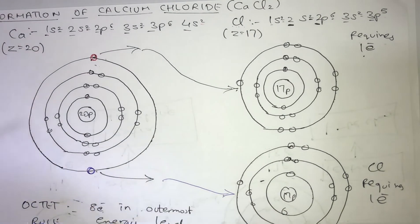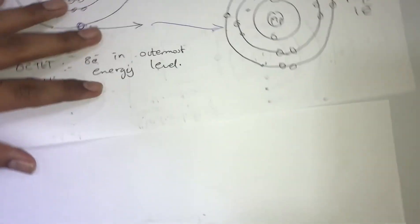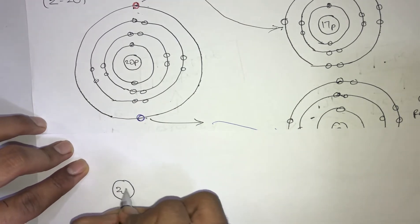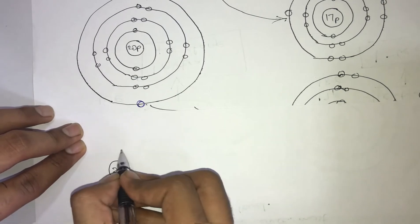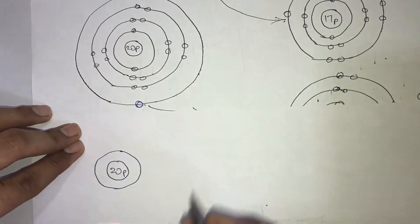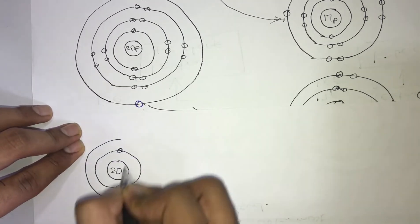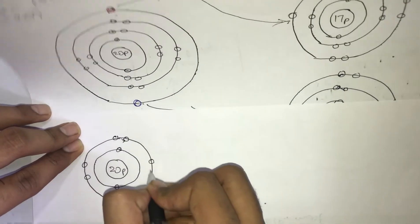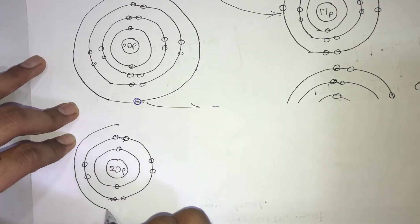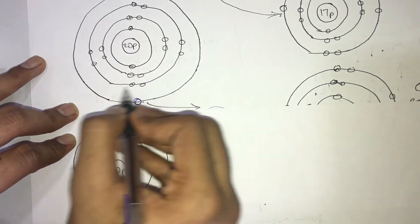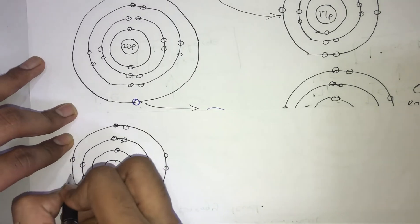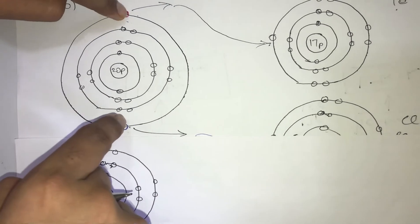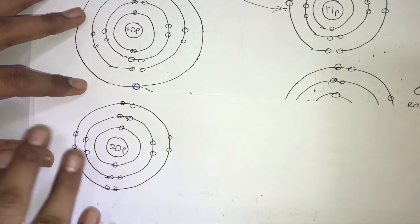Now let us draw the new diagram of the calcium atom after donating its electrons. It has 20 protons in the nucleus. In the first energy level it has 2 electrons, in the second energy level it has 8 electrons, and in the third energy level it has 8 electrons. In the fourth energy level it now has no electrons, because both electrons were donated. So there is no need to draw the fourth energy level.